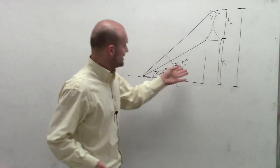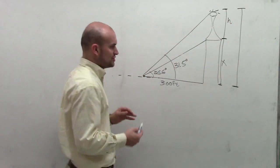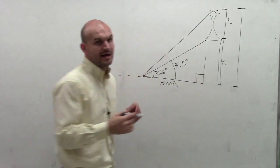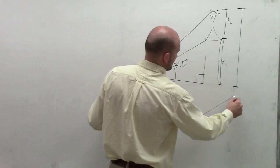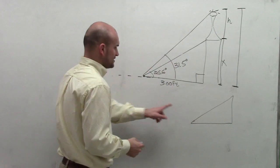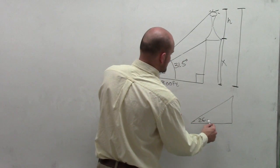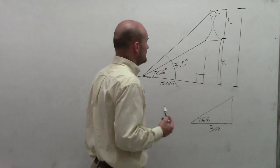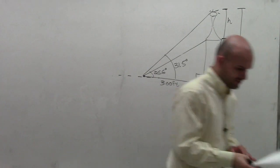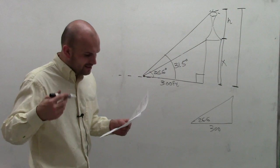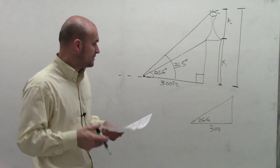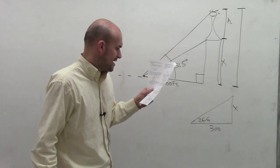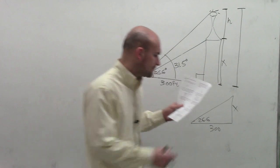So the first thing I'd like to do is break apart these triangles. First, we know we're going straight up, so we're dealing with right triangles. Let's look at our first triangle — the one with the smaller angle of elevation, which is 26.6 degrees, and the horizontal distance is 300 feet. We need to figure out what x is, which is the height to the base of the antenna.